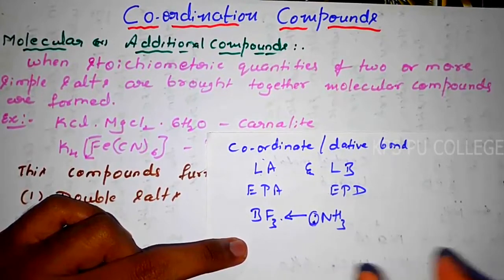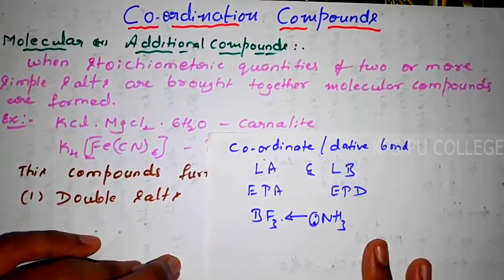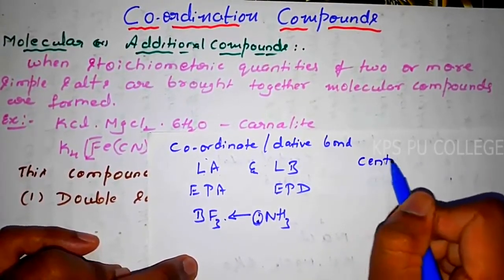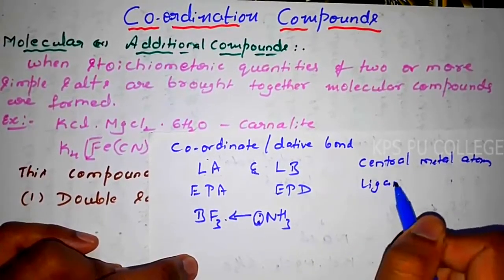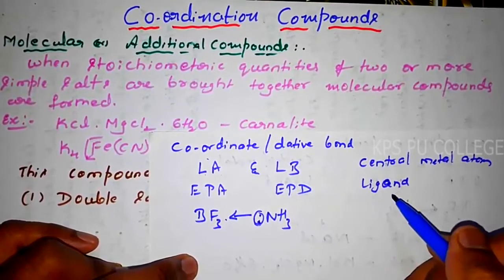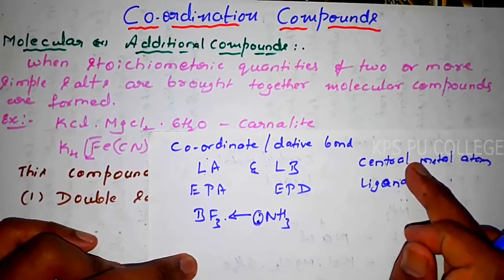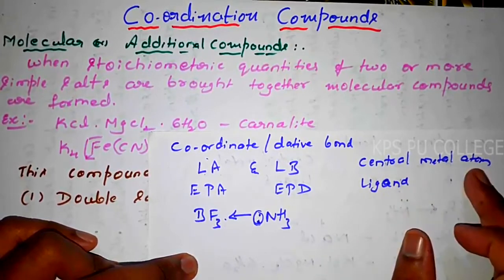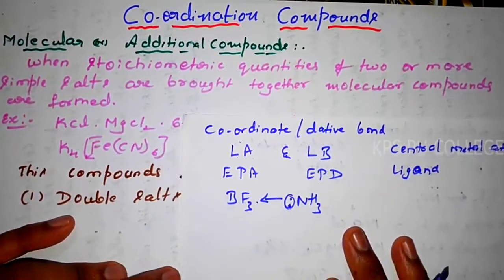BF3 is an electron-deficient compound; it can accept the lone pair of electrons from NH3. This creates a coordinate bond between these two compounds. In this chapter, the coordinate bond exists between the central metal atom and the ligand.